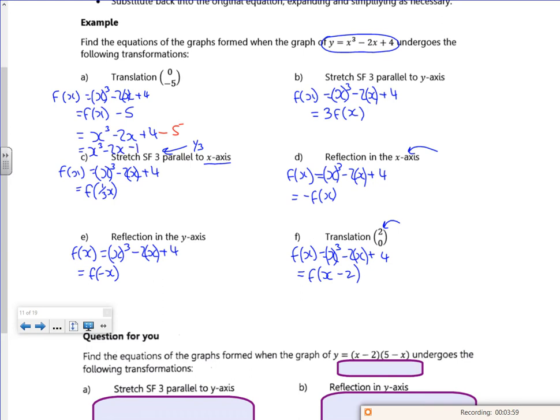So let's have a look at this one. This is 3 lots of. So it's 3 lots of my original graph, x cubed minus 2x plus 4. So that would be 3x cubed minus 6x plus 12.